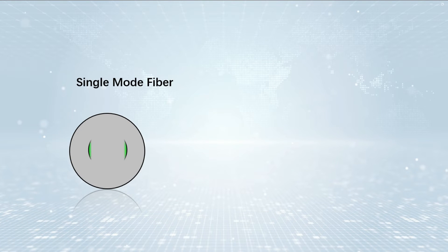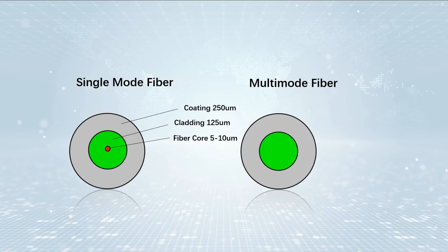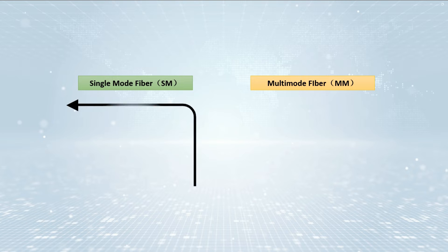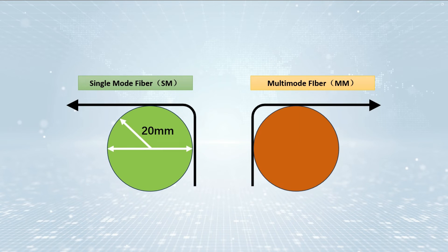Single-mode fiber has a higher critical bending radius than multimode fiber. This is because single-mode fiber has a smaller core. The minimum bend radius for single-mode fiber is around 20 millimeters. The minimum proper bend radius for multimode fiber is around 30 millimeters.